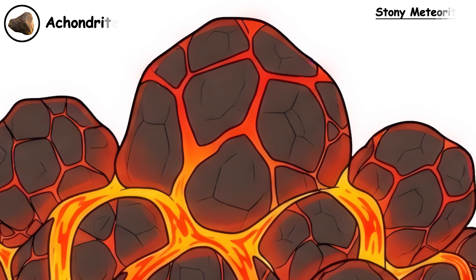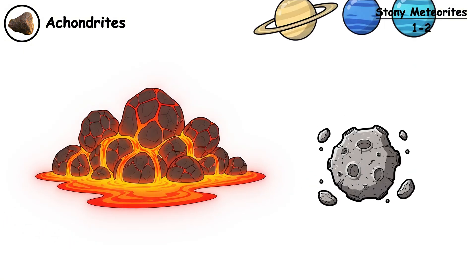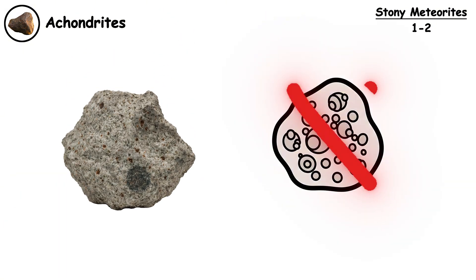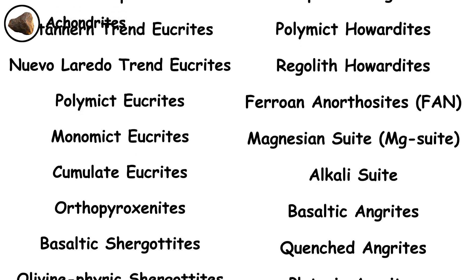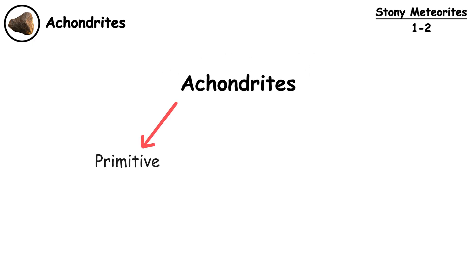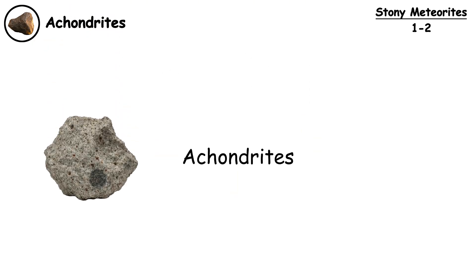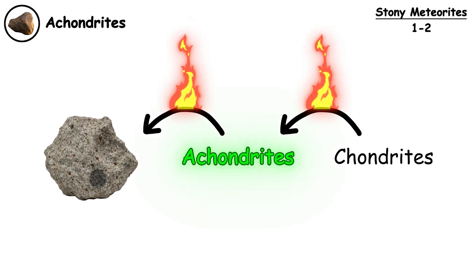Achondrites. They are igneous rocks that were once melted, either on asteroids or planets. They do not contain chondrules because the parent body was hot enough to destroy them. Although their classification system is confusing, they can generally be grouped under three main categories. Primitive types represent a transitional category between chondrites and true achondrites, because their heat-driven transformation remained incomplete.